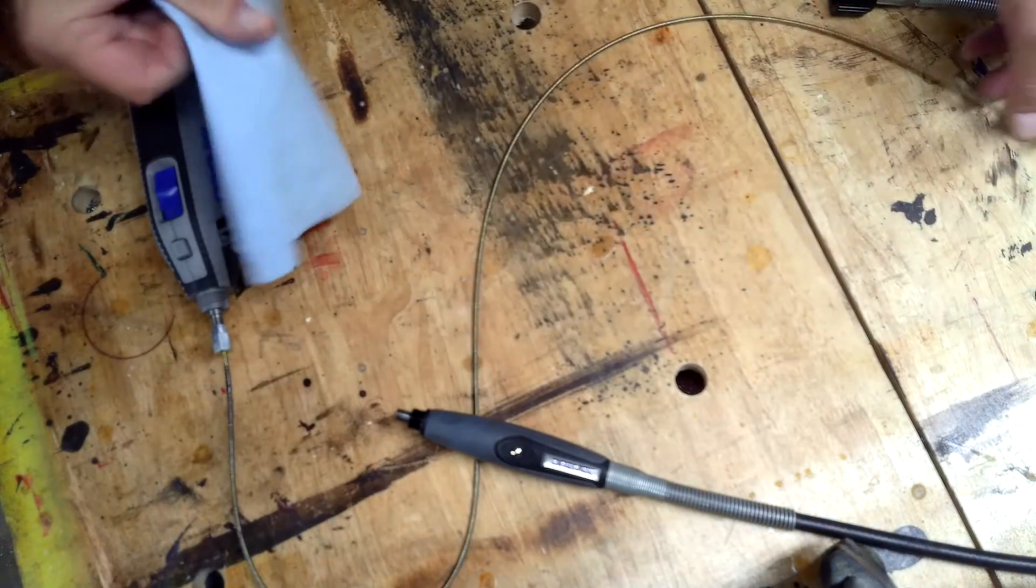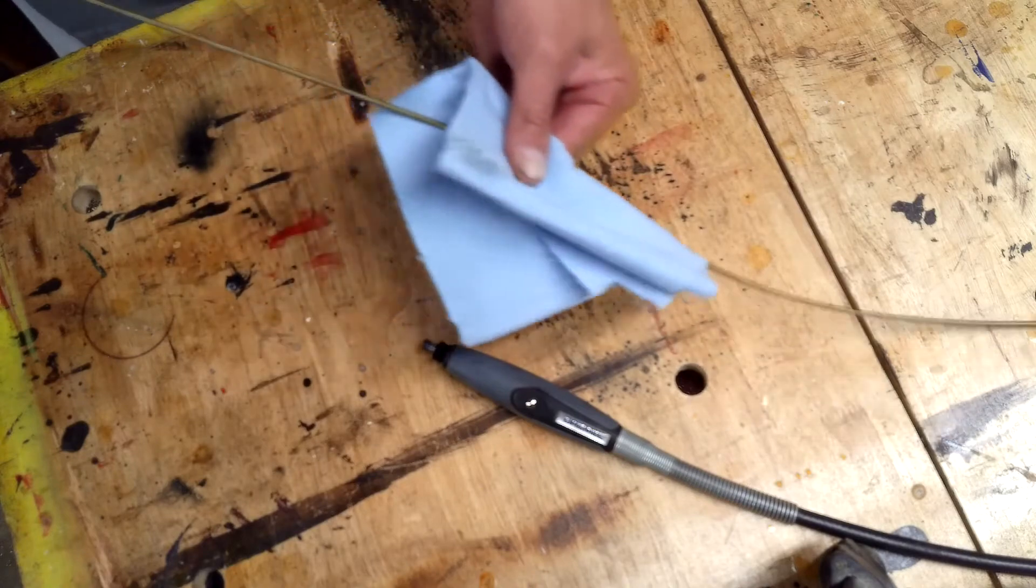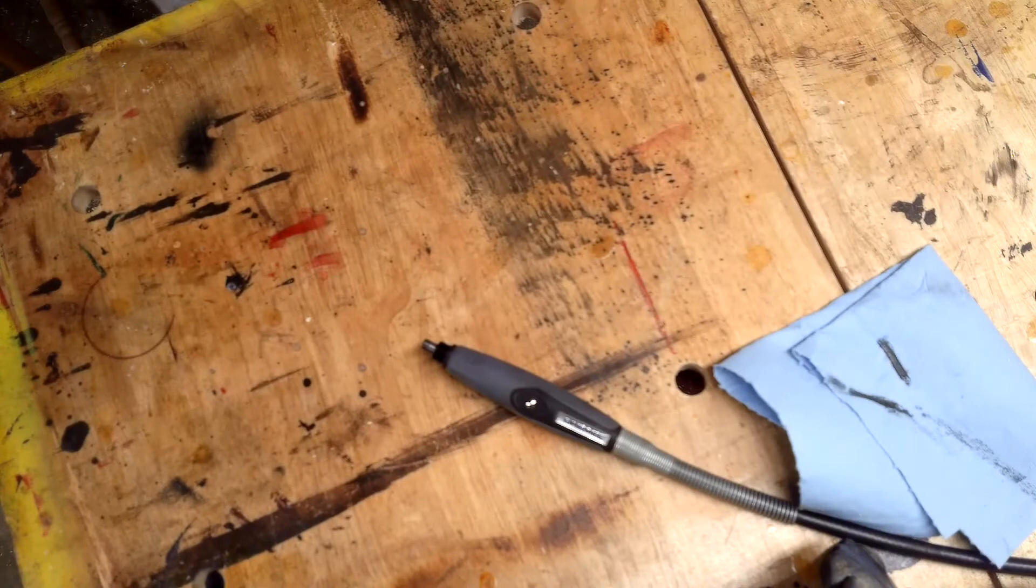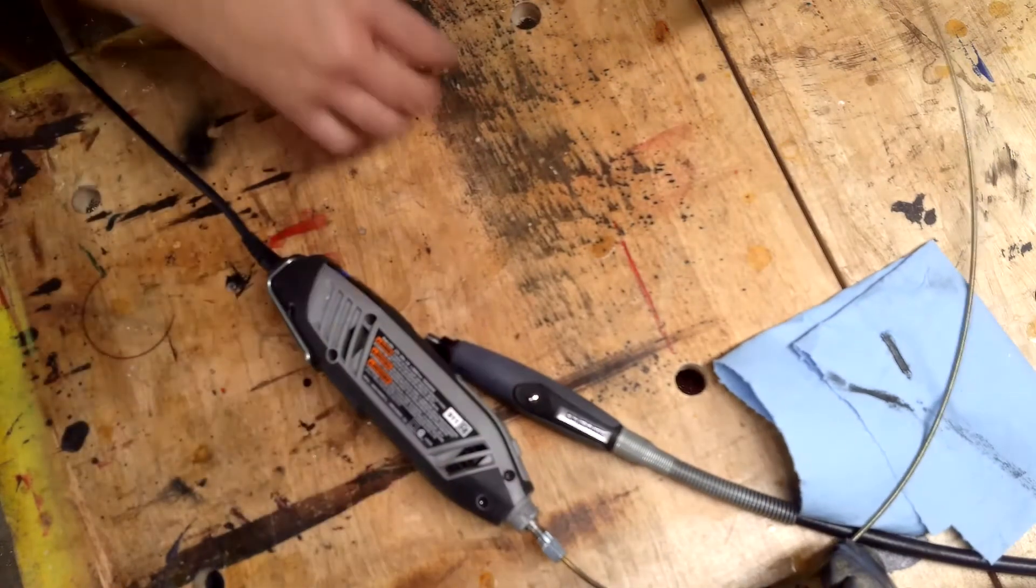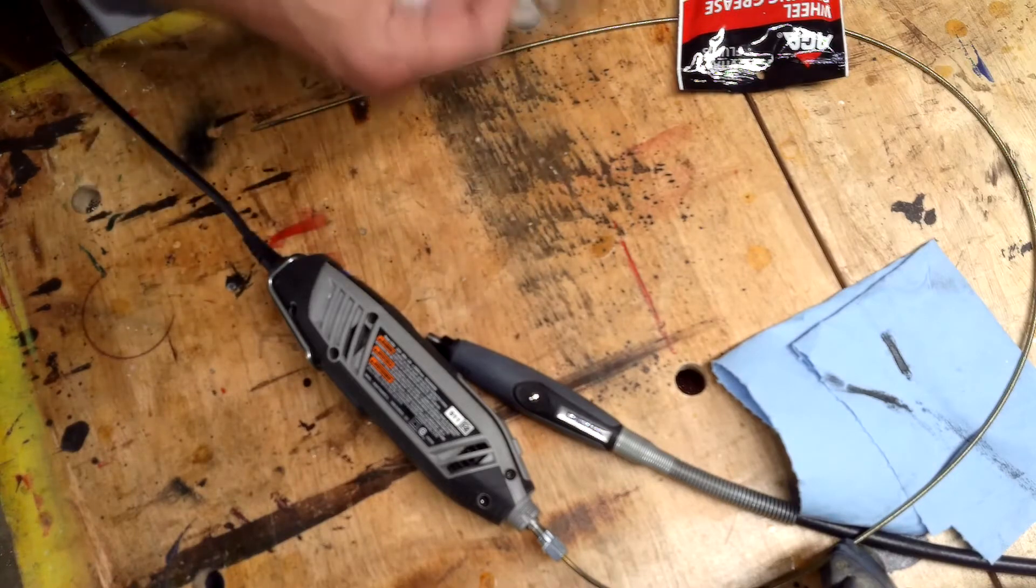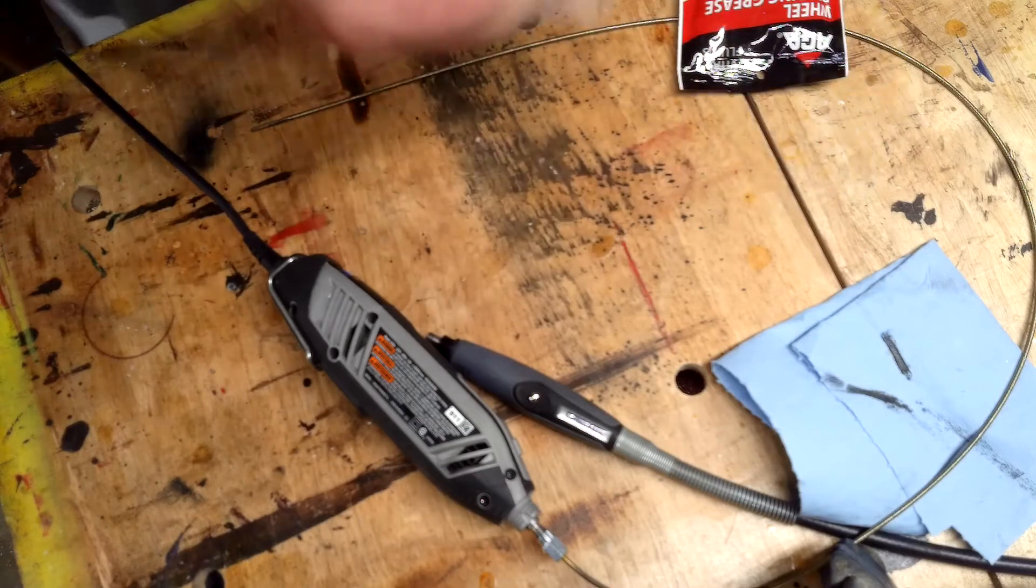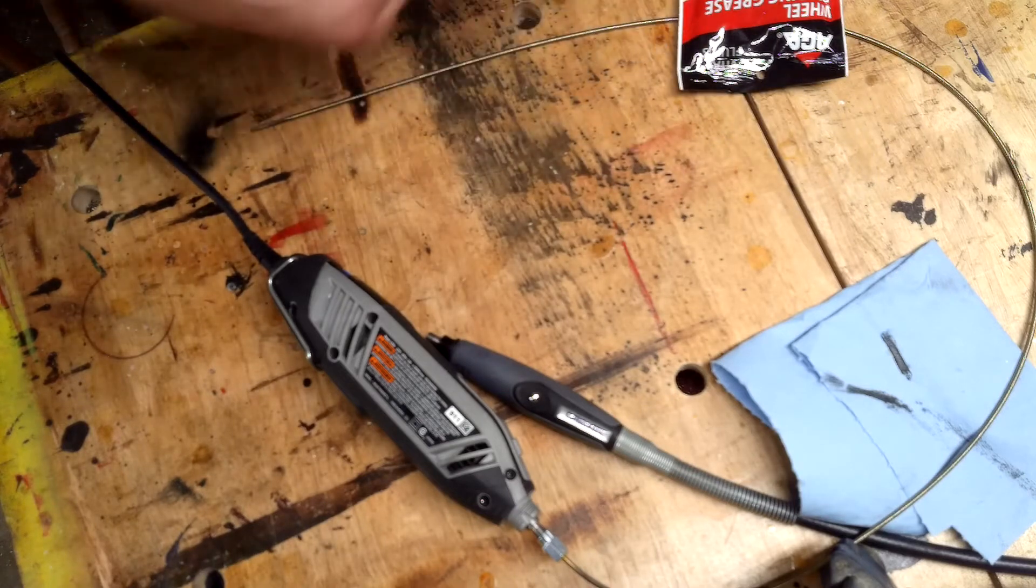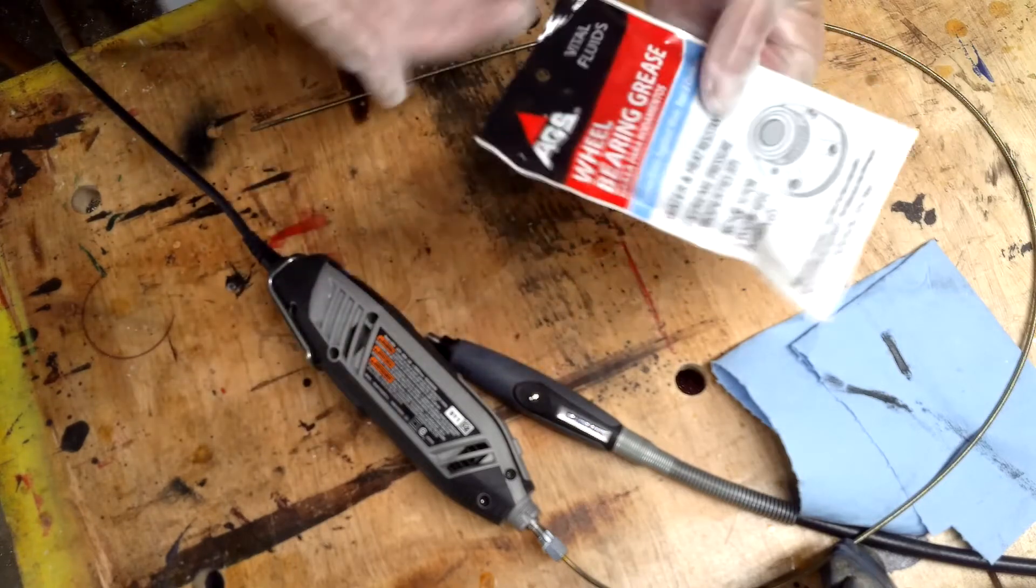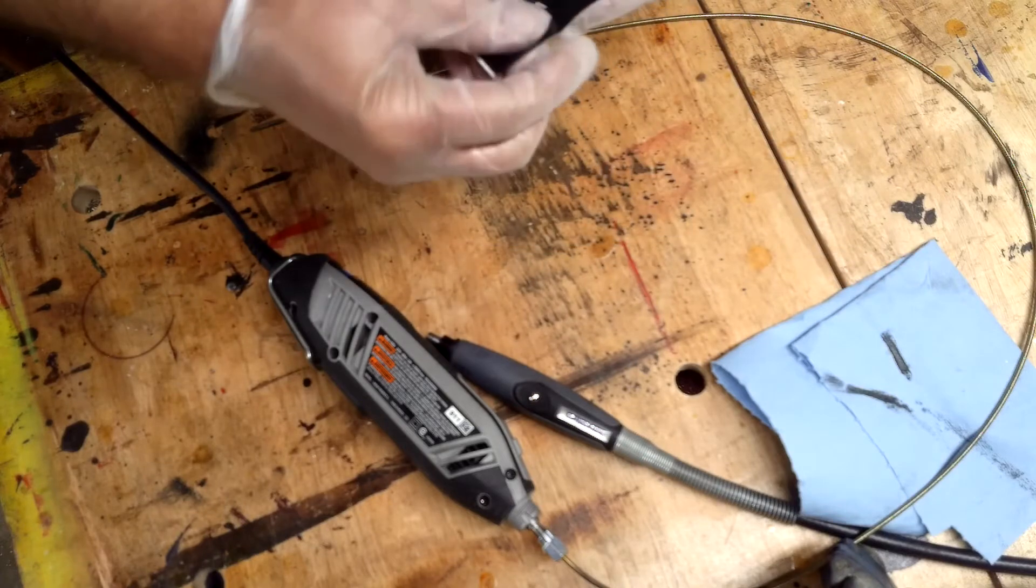I usually take a paper towel and get off all the old grease. And what they recommend is wheel bearing grease to lubricate that flex shaft. So you can pick these up at AutoZone or any auto parts store for a few bucks.